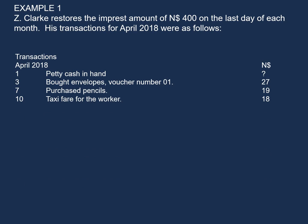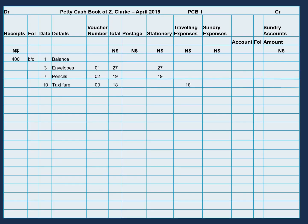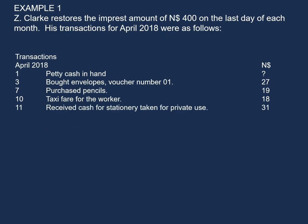On the 10th, taxi fare for the worker. We will enter this on the credit side of the cash book. The date is the 10th, details is taxi fare, voucher number 03, and the total amount is $18. This is a traveling expense, therefore we will classify it under traveling expenses.